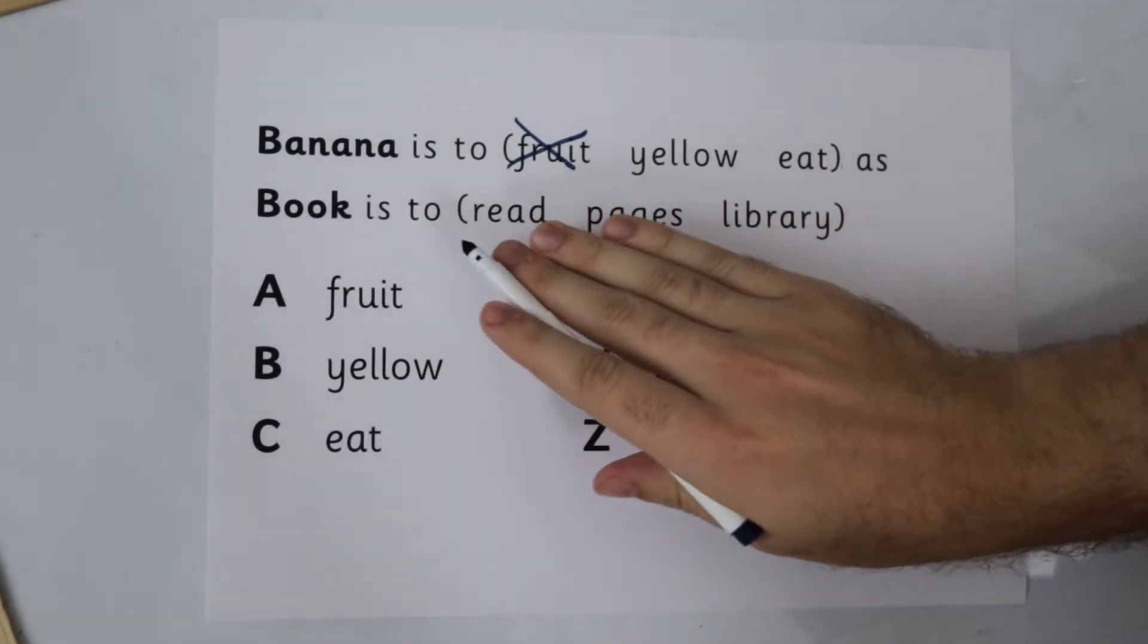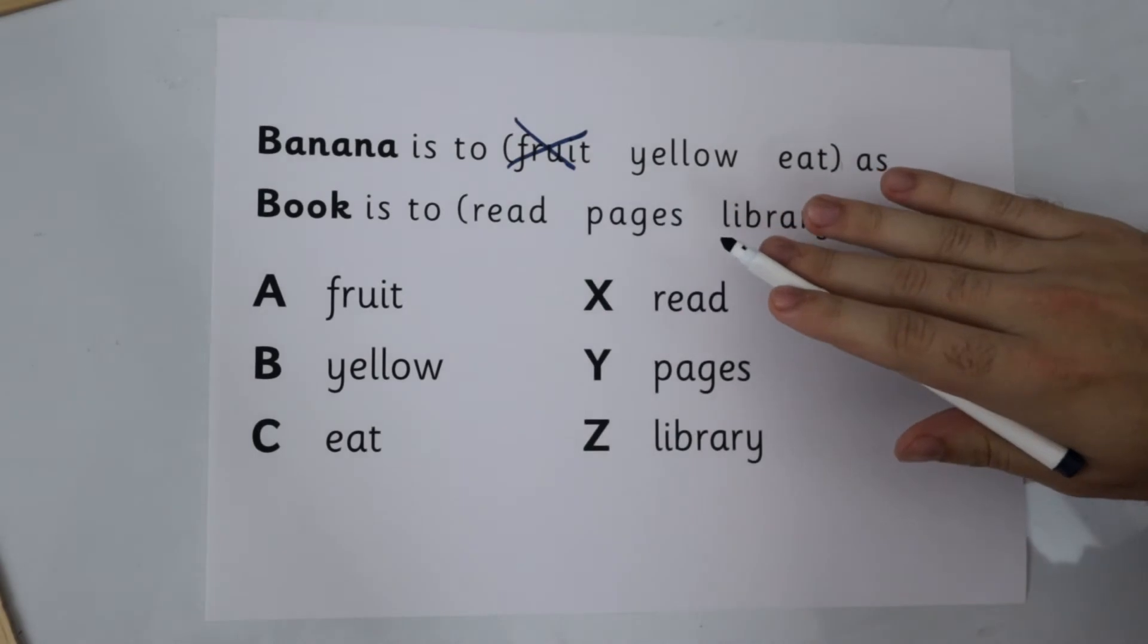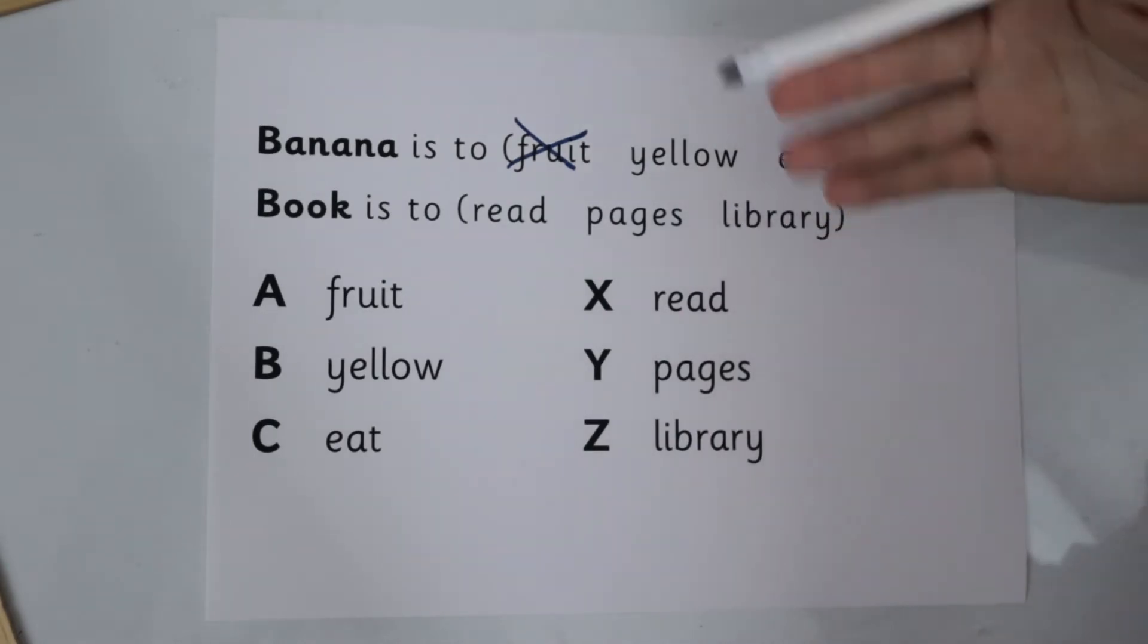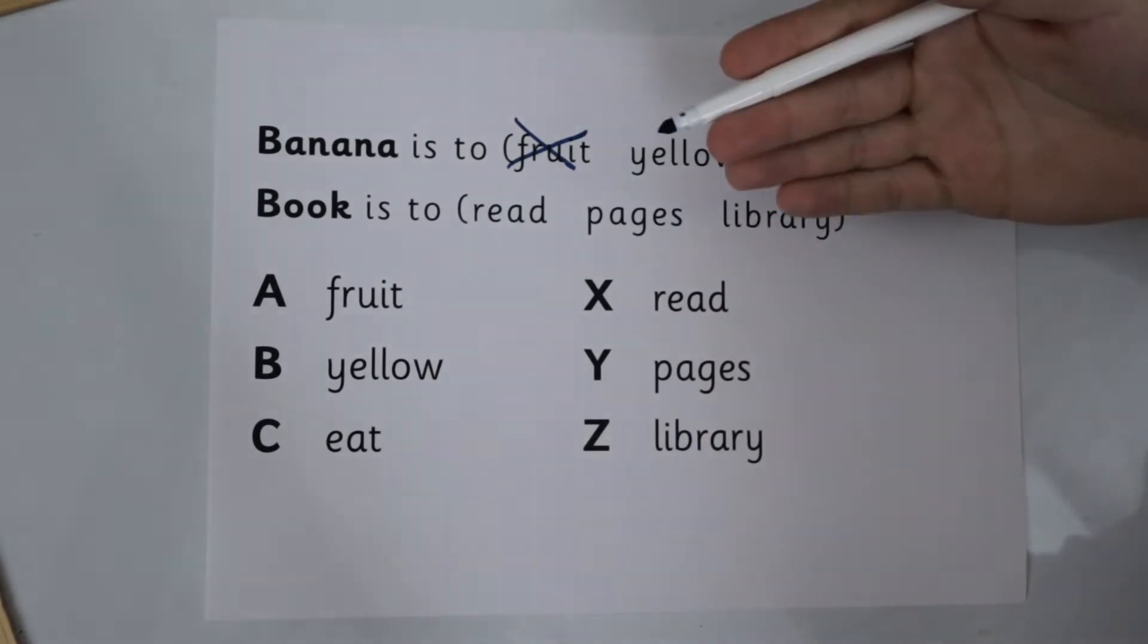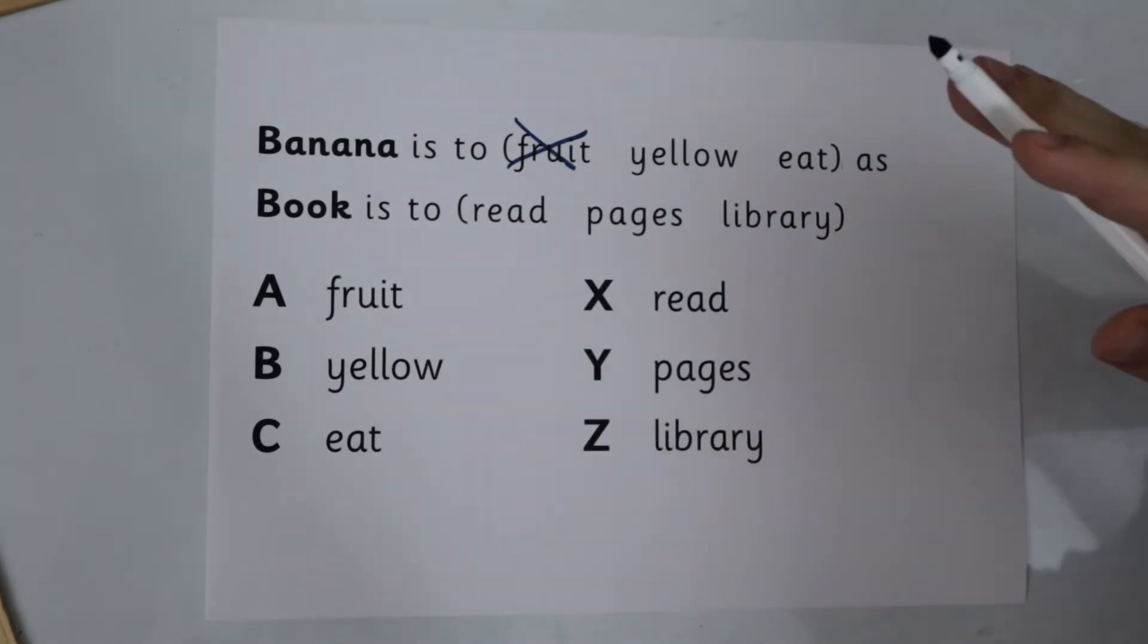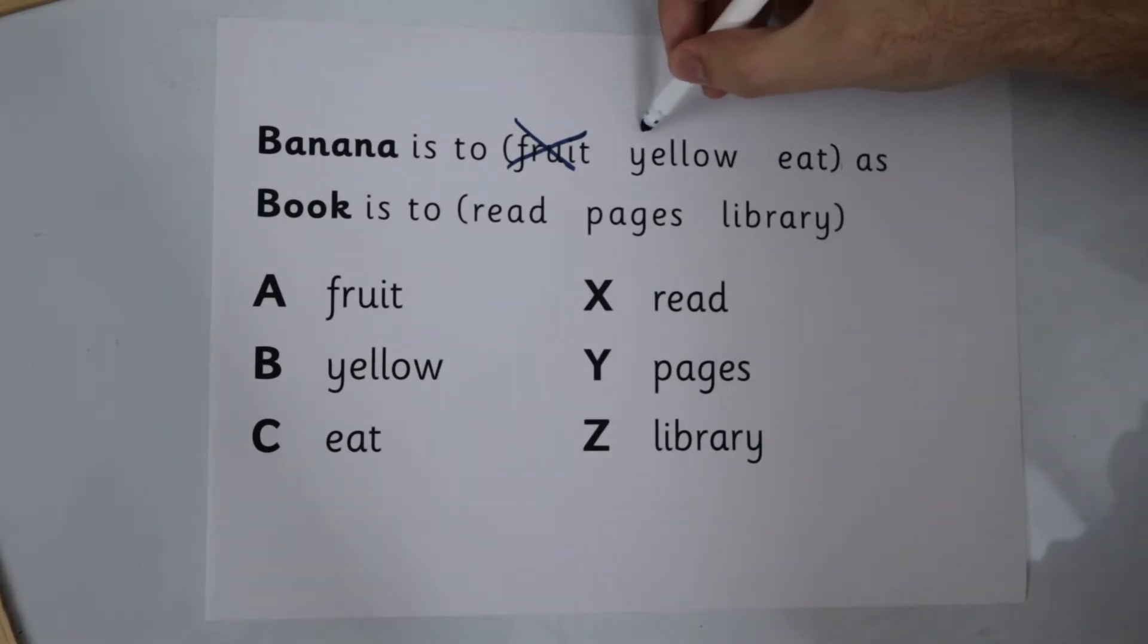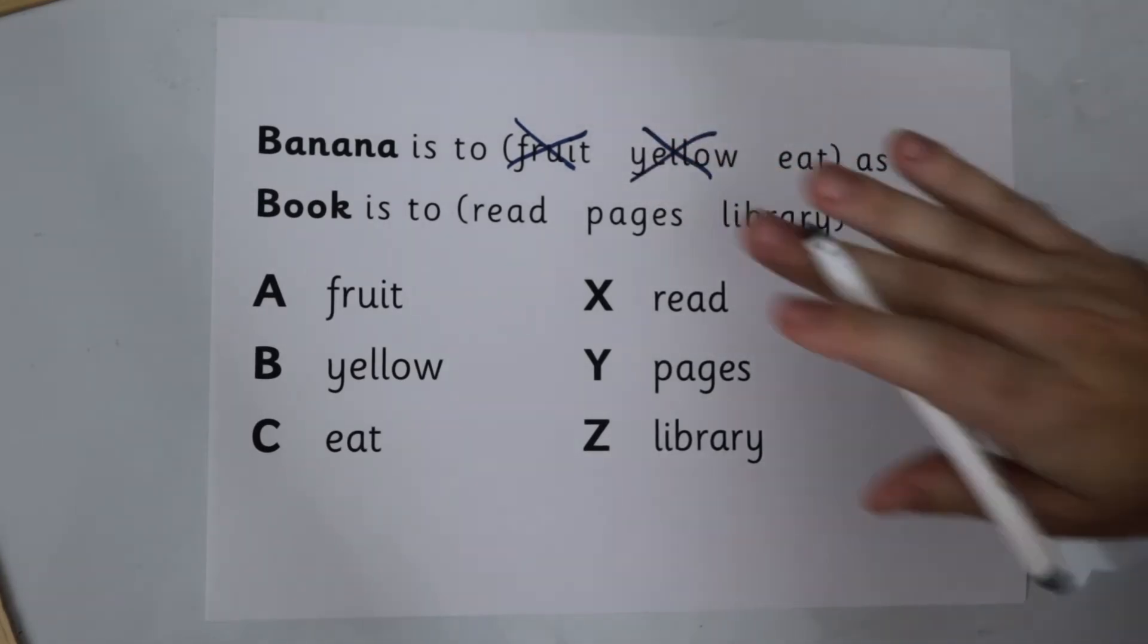Now let's look at book. A book is read, nonsense, doesn't make sense. Book is pages. Well I guess there are pages inside a book but we couldn't describe it as pages. And then finally, book is to library. That doesn't make any sense because a book isn't going to be described as a library. So in fact we can get rid of yellow as it doesn't work either.